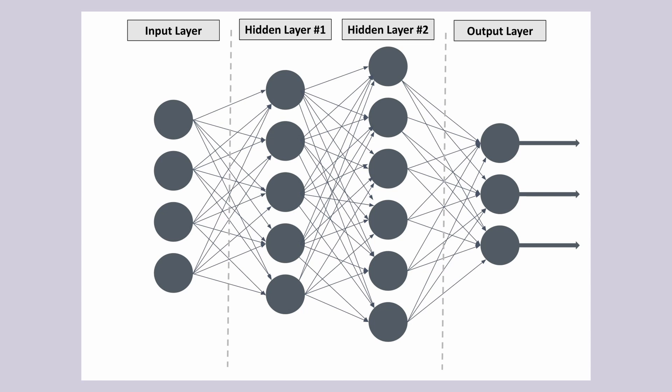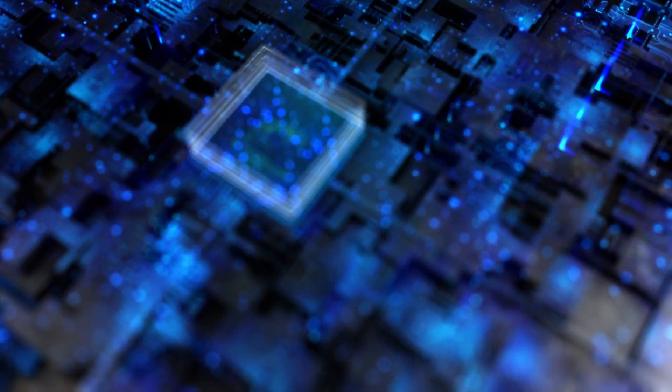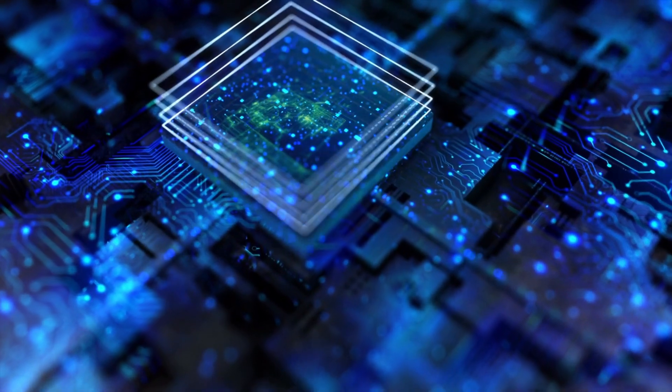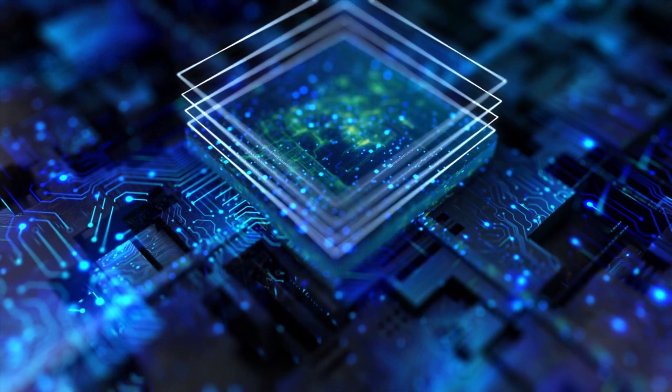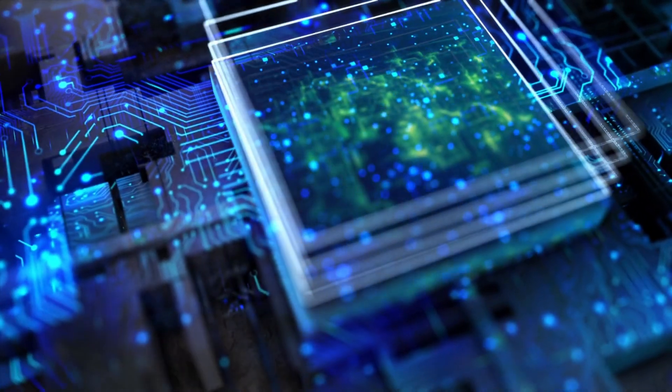The design of an ANN is inspired by the biological neural network of the human brain, leading to a learning process far more capable than standard machine learning models. This is what a simple artificial neural network looks like. The leftmost layer is called the input layer, the rightmost is the output layer. The middle layers are called hidden layers because their values aren't observable in the training set — they are the calculated values used by the network to do its work. The more hidden layers between input and output, the deeper the network. Any ANN with two or more hidden layers is referred to as a deep neural network.